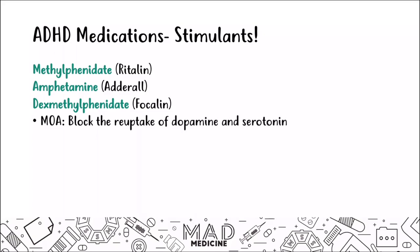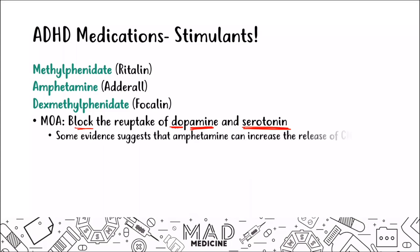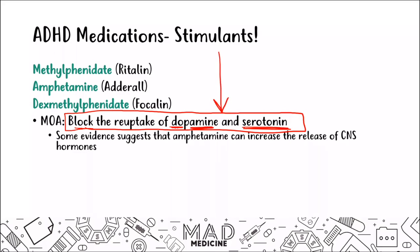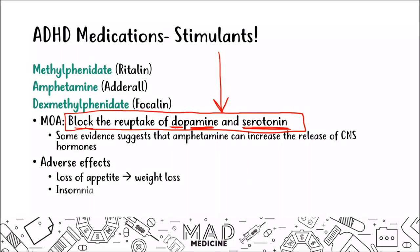The mechanism of action of stimulants is that they block the reuptake of dopamine and norepinephrine — that's very important. Because of this, you're going to have an increase in dopamine and norepinephrine activity in the central nervous system. Some evidence also suggests they can induce the release of CNS hormones, but the main mechanism you should know is blocking reuptake. As far as adverse effects: you have loss of appetite, which will eventually cause weight loss; you can have insomnia because this is a stimulant that keeps the person's mind going; and also abuse potential — a lot of people may present for ADHD simply because they want this medication to abuse it.